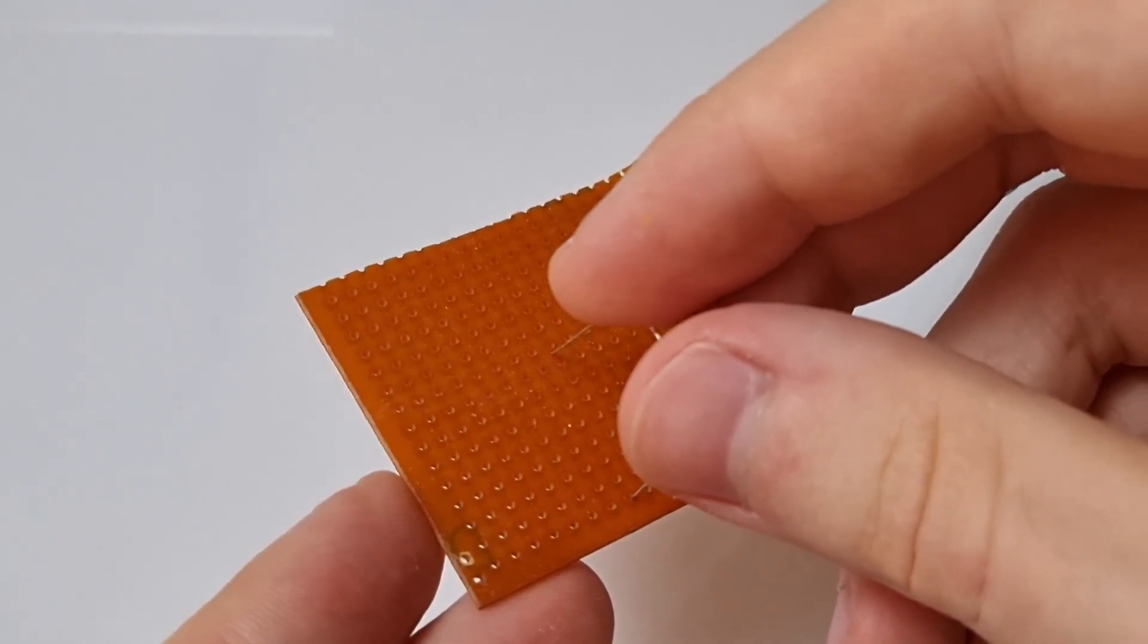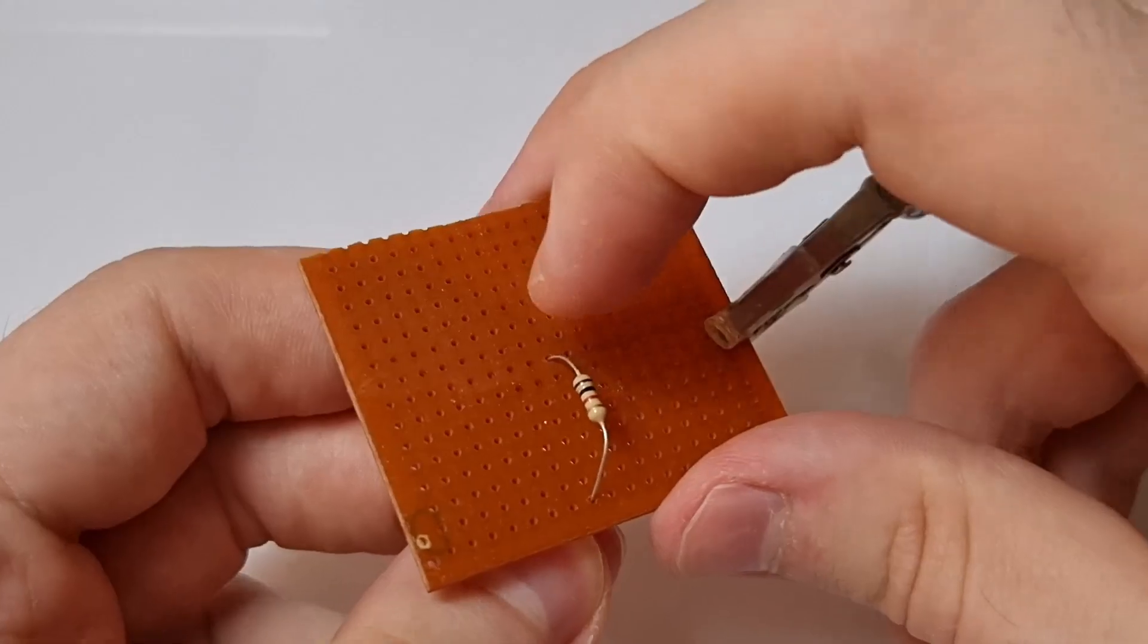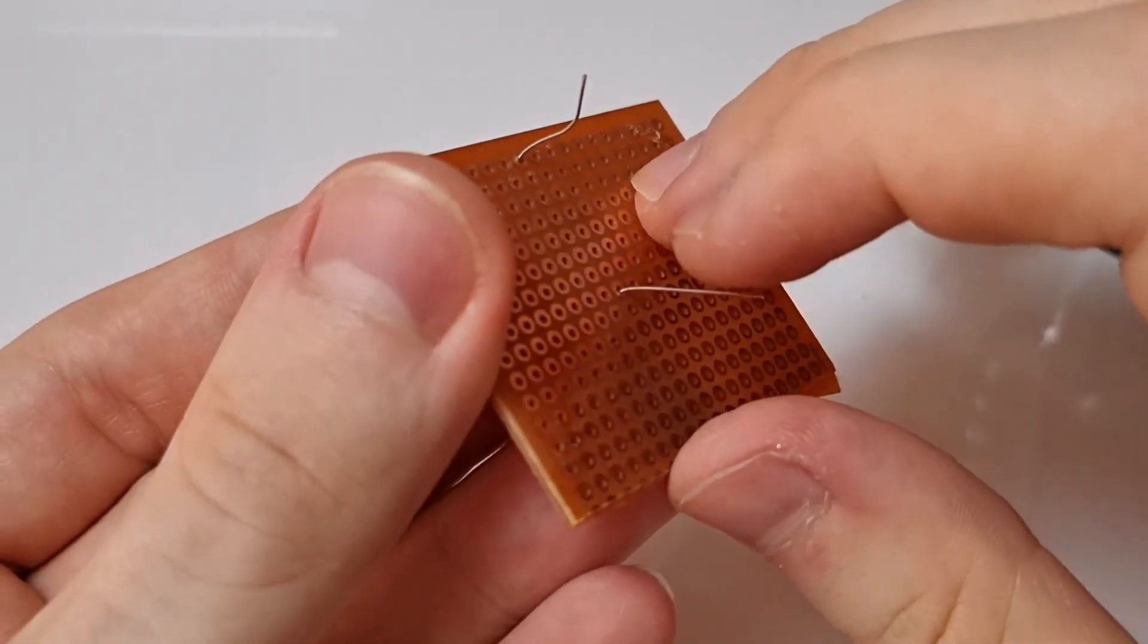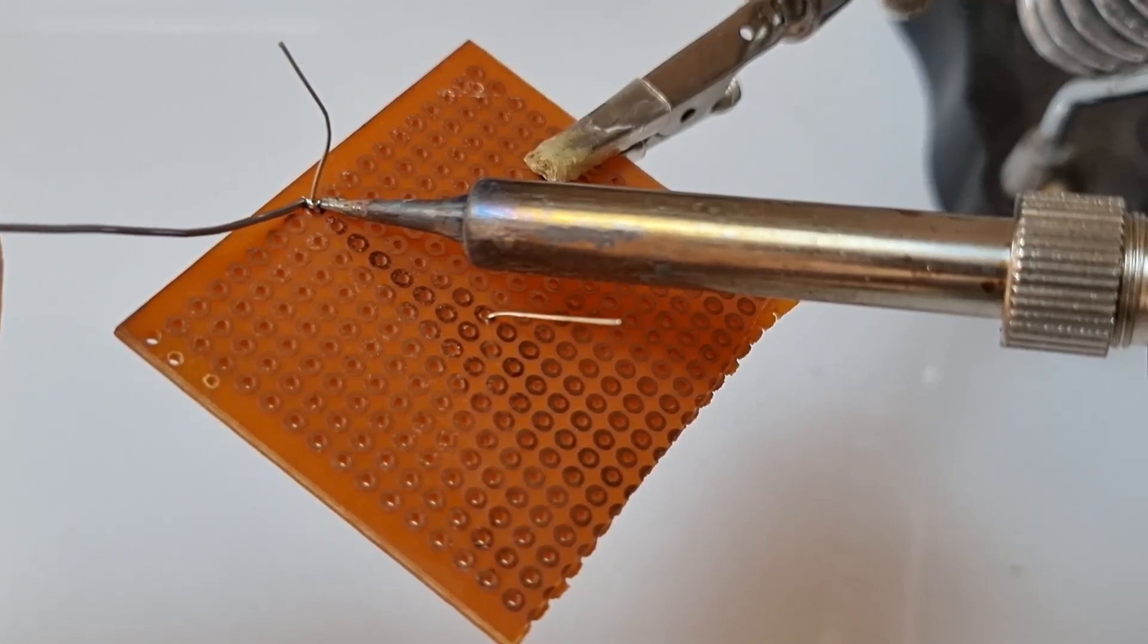We typically solder these resistors with a soldering iron. They are quite easy to work with as you can see. You can bend the leads to help hold the thing in place, making the soldering process simple enough for anyone to do.